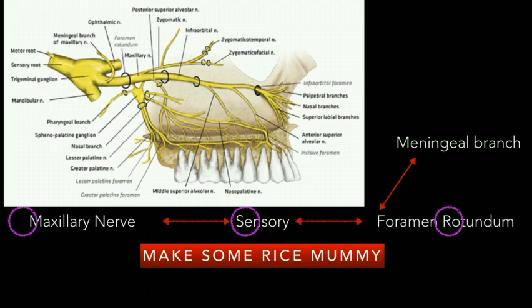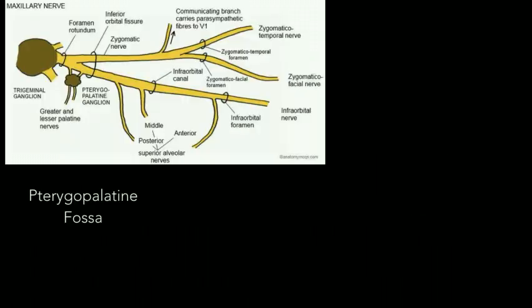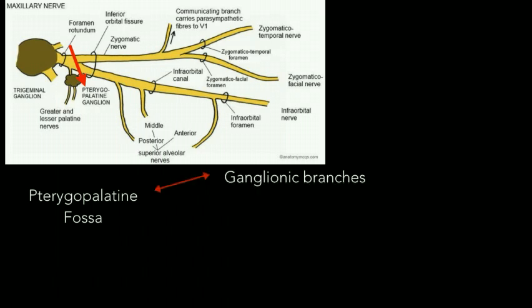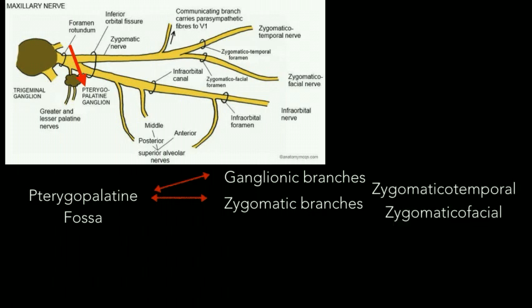After leaving the foramen rotundum, the nerve enters the pterygopalatine fossa. There it is intimately related with the pterygopalatine ganglion — as shown by the red arrow on the diagram — where it gives out ganglionic branches to the pterygopalatine ganglion, then further gives out the zygomatic branches, which in turn divide into the zygomaticotemporal and zygomaticofacial branches. Another branch given out here is the posterior superior alveolar nerve.